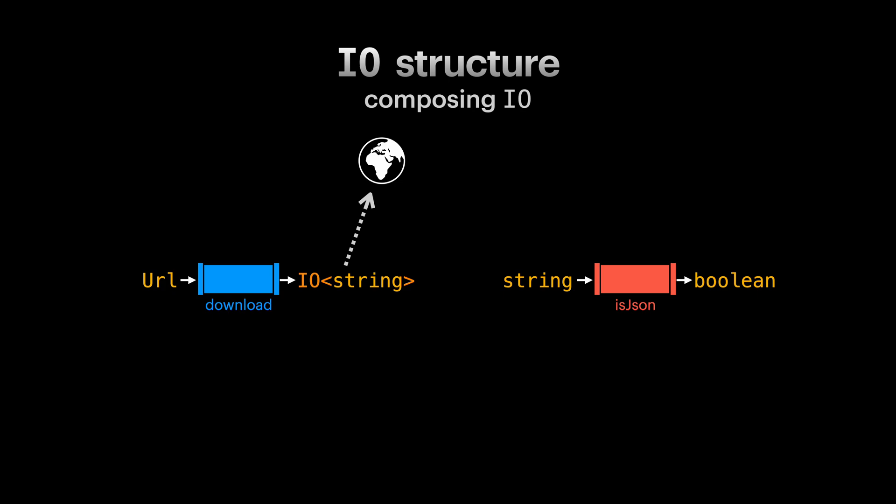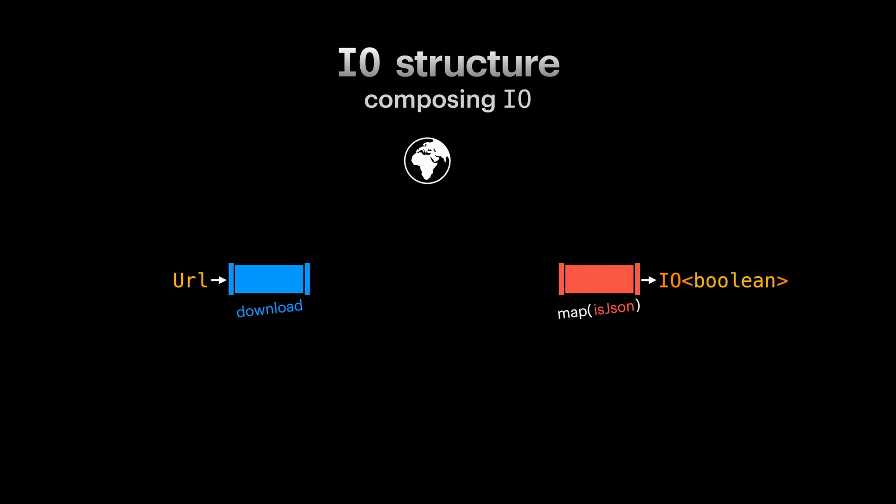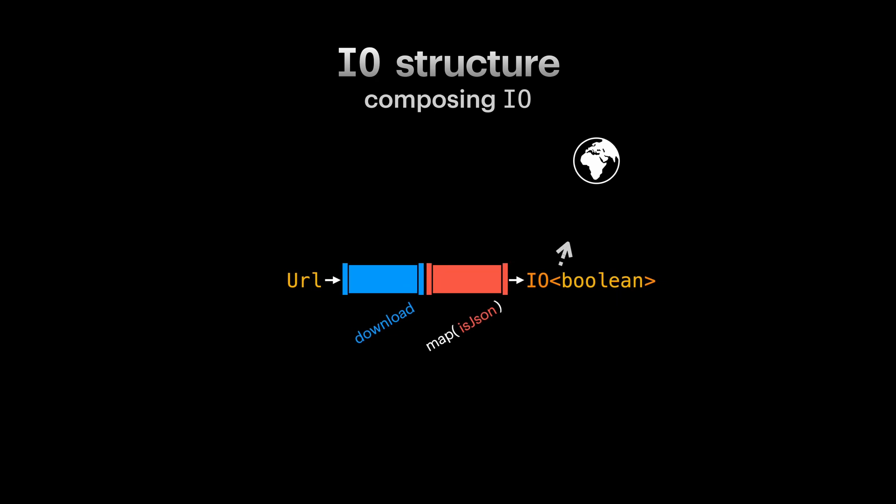The same way as we did with option, list and either structures. If IO is functor, then we can lift our isJSON function to our IO context. If this looks new to you, I have a dedicated video on functors in this course that I went through and explained functors in details. Now that the types are compatible, we can compose these two pure functions reliably. The result of this composition is another pure function that returns an IO of a boolean.